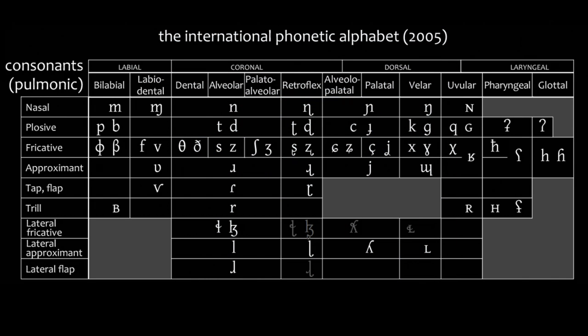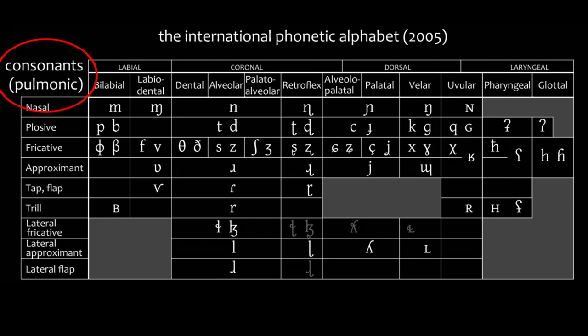And in just the same way, the consonant chart has consonants articulated at the front of the mouth on the left and at the back on the right. This chart specifically is for pulmonic consonants. The pulmones in Latin are the lungs — so these are consonants that come from the expulsion of air from the lungs. You can also make consonant sounds without expelling air, for example languages that have a click sound. Xhosa is one of these languages — a language in South Africa — where the initial sound is essentially a click sound with the tongue.